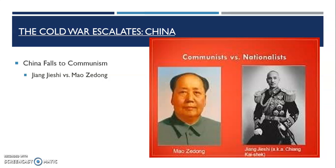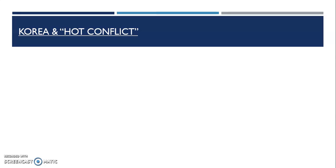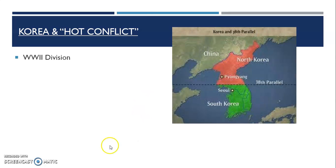This happened, unfortunately, the very same year that the United States was scheduled to leave South Korea, which gave a great opportunity for North Korea to invade. To understand Korea and the beginning of the hot conflict — the Korean War — you need to know that at the end of World War II, Korea had been divided, just like Germany had. As this map shows, the country had been divided along what's called the 38th parallel.